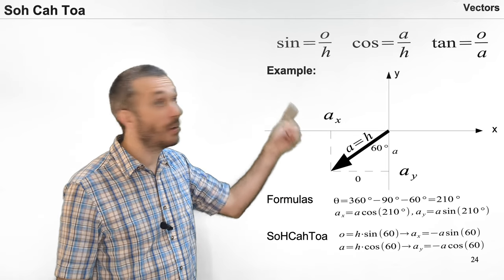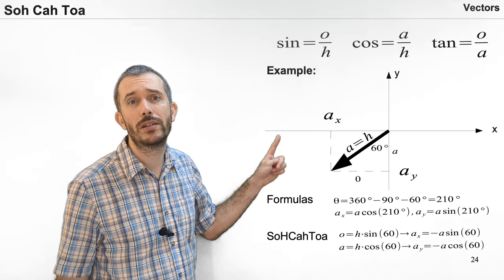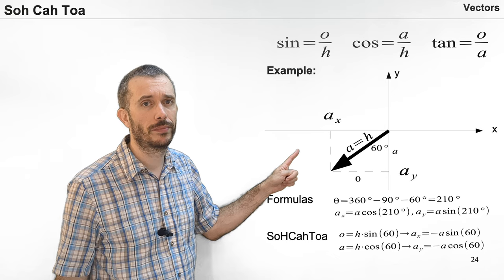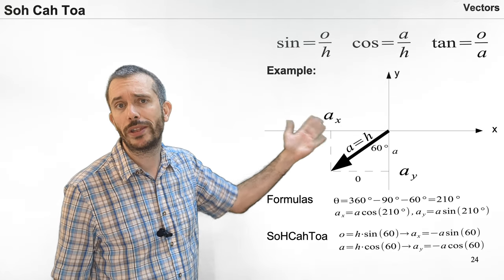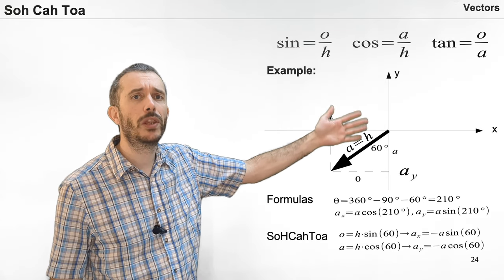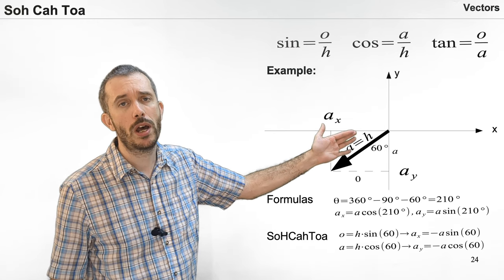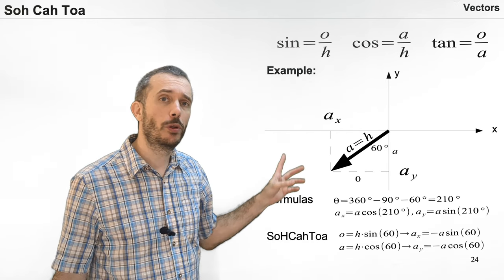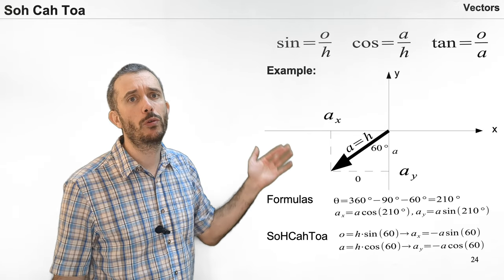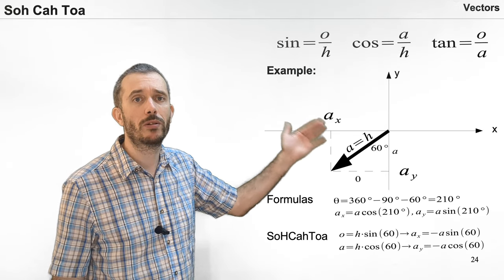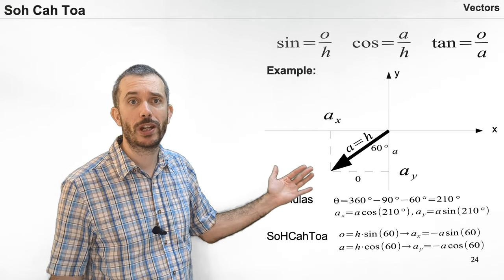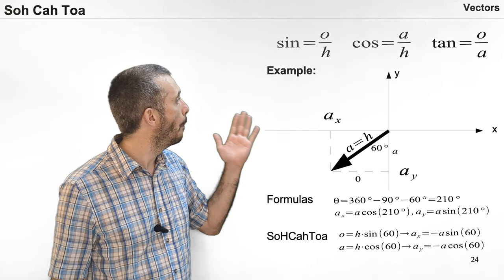Or just use SOHCAHTOA in the triangles that you can find. In those triangles, the magnitude of the vector is always the hypotenuse. If you're using the formulas based on the angle from the x-axis, math will automatically give you positive and negative signs for the components. If you're using SOHCAHTOA, you will have to attribute those signs by yourself by looking at which direction the vector is pointing at.